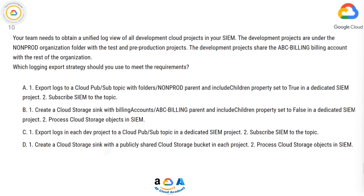Your team needs to obtain a unified log view of all development cloud projects in your SIEM. The development projects are under the non-prod organization folder with the test and pre-production projects. The development projects share the ABC billing account with the rest of the organization. Which logging export strategy should you use to meet the requirements?